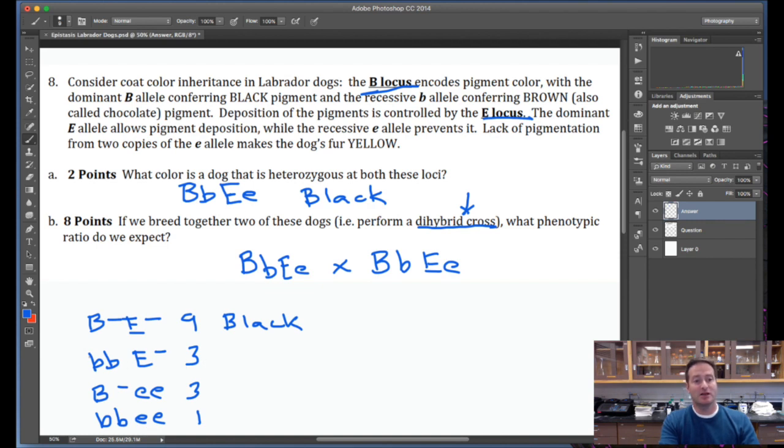These dogs produce black pigment. However, it can't be deposited in the hair. This is the masking locus here. It masks the variation here. So we have epistasis. These dogs would be yellow. These dogs produce brown pigment. Can't be deposited in the hair because two copies of the little E allele makes the dog's fur yellow.